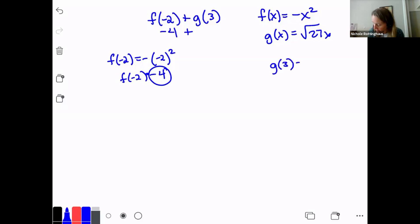So negative 4 plus g of 3. Well, g of 3 is going to be the square root of 27 times 3. 27 times 3 is 81. So g of 3 is the square root of 81, which is 9. So f of negative 2 plus g of 3 is going to be negative 4 plus 9 or 5. Great problem. Spend a little bit of time on this. Make sure you understand how to do this problem. And if you have any questions, talk to your tutor, because this is a really good problem to know how to solve this and the first one we did for sure.